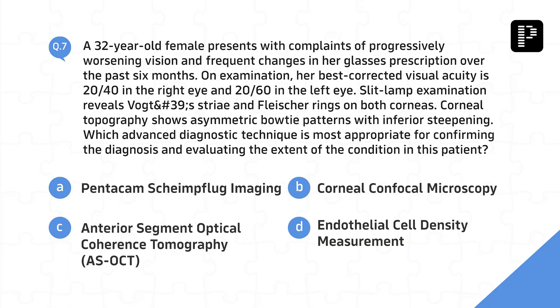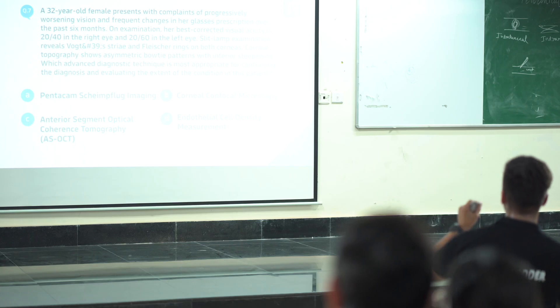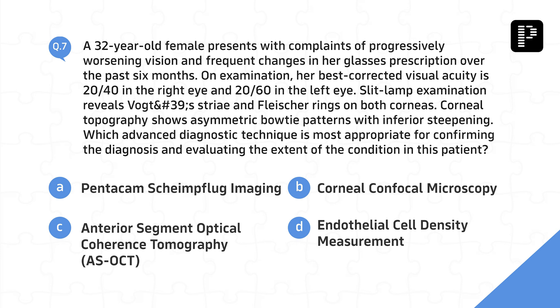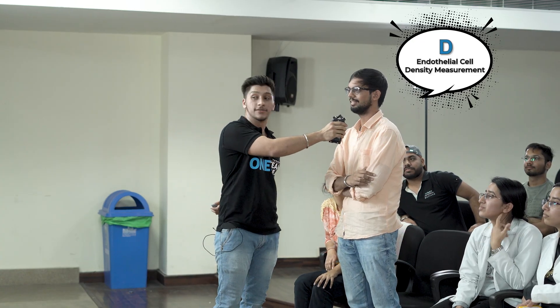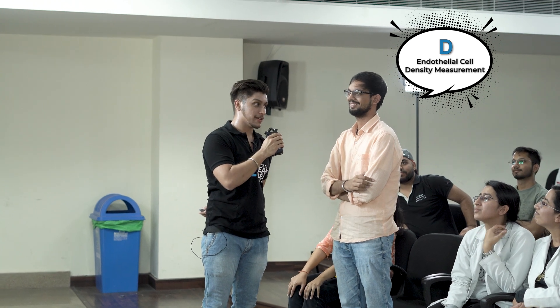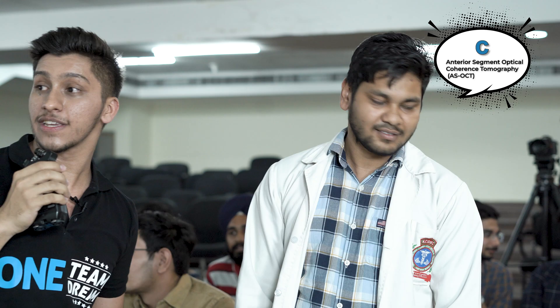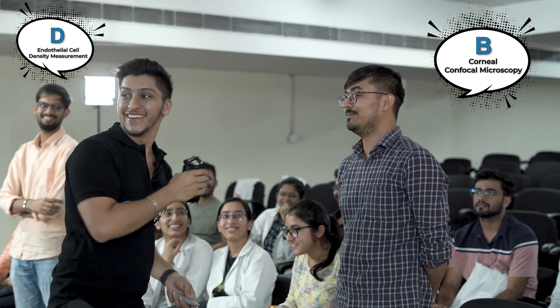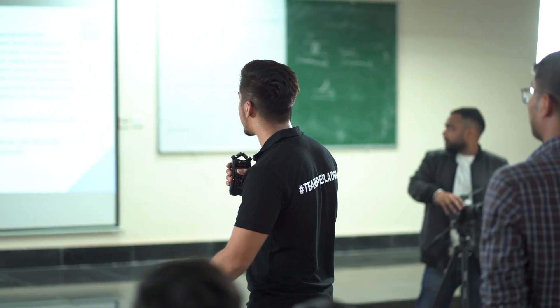A 32-year-old female presents with progressive worsening vision and frequent changes in her glasses prescription over the past six months. Best corrective visual acuity is 20/40 in the right eye and 20/60 in the left eye. Slit lamp examination reveals Vogt's striae and Fleischer rings on both corneas. Corneal topography shows asymmetric bow-tie patterns with inferior steepening. Which advanced diagnostic technique is most appropriate for confirming the diagnosis? Answers given: D — endothelial cell density measurement; C — anterior segment optical coherence tomography; B — corneal confocal microscopy. Let's see who has the correct answer.